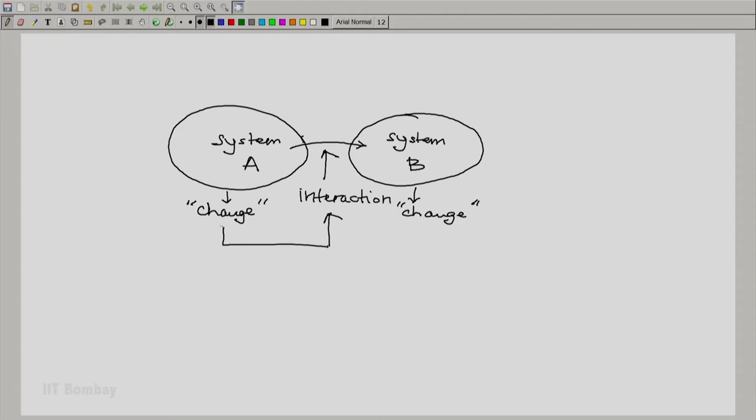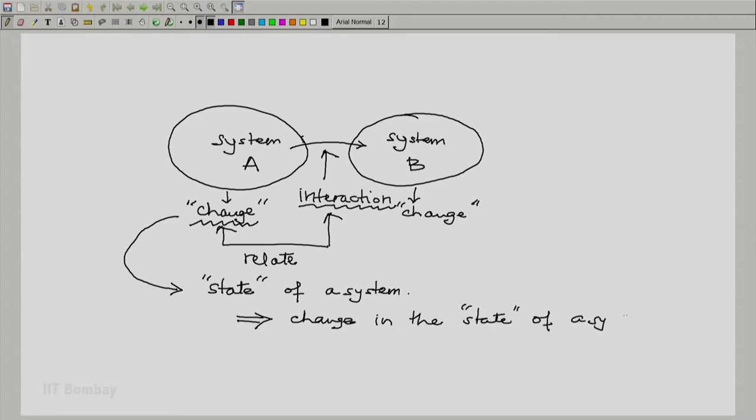We have to relate this change to the interaction and for this we will have to not only quantify the interactions properly but we will have to quantify the change in the behavior of a system. And to decide on this change we say that we study and we observe the state of a system so that we can know and study the change in the state.